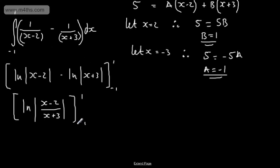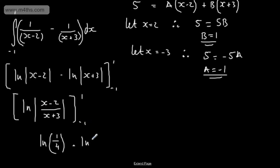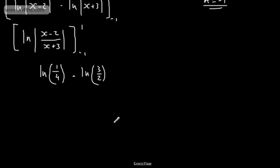Substituting x equals 1 gives minus 1 over 4, and taking the modulus gives ln(1/4). Substituting x equals minus 1 gives (minus 3) over 2, so we get ln(3/2). Subtracting, we use the log law to divide: ln(1/4) minus ln(3/2) equals ln of (1/4) divided by (3/2), which equals ln(1 over 6).